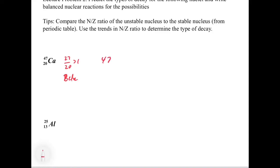For 47 over 20 calcium, we write down our beta particle, which is 0 over -1 e. Then to balance this out, we get the same number of nucleons in our product because the mass number was 0.